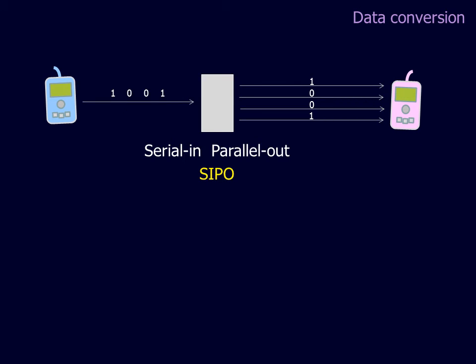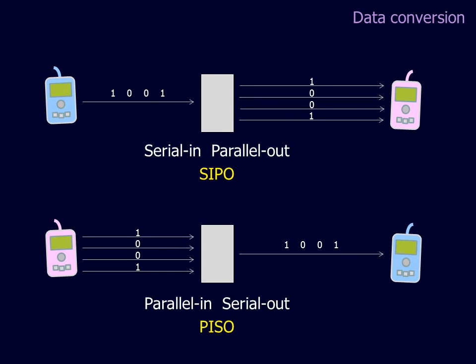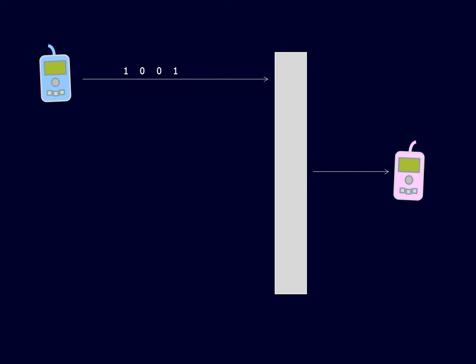The case where the input line is serial, and the output line is parallel, is called Serial In, Parallel Out, or SIPO. The reverse case is called Parallel In, Serial Out, or PISO. Another communication issue is that one device simultaneously receives data from multiple senders.